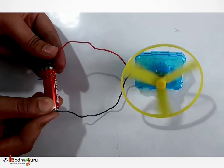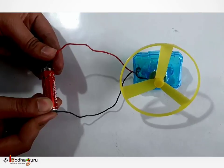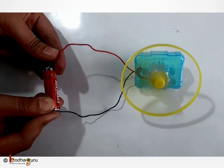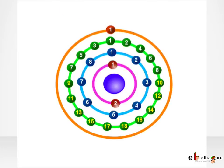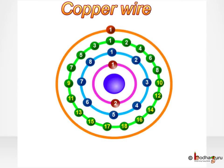But why didn't it run until we attached a battery to it? Let's try to find the answer. Let us first look at the copper wire internally. We know each element is made up of atoms.